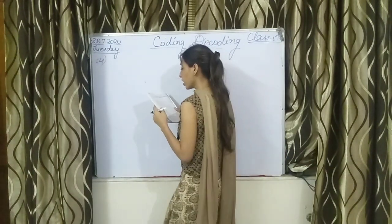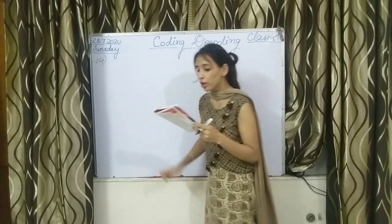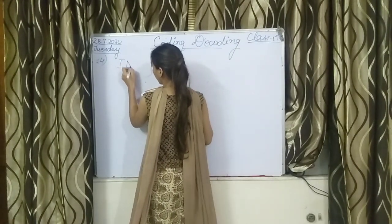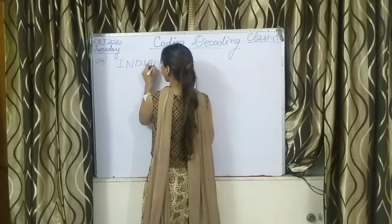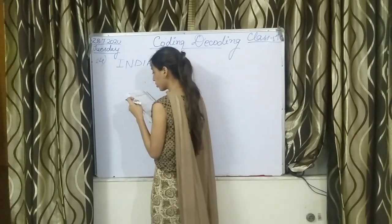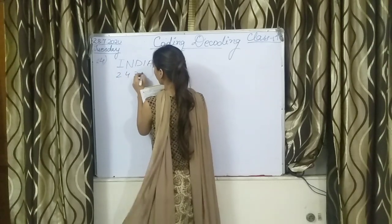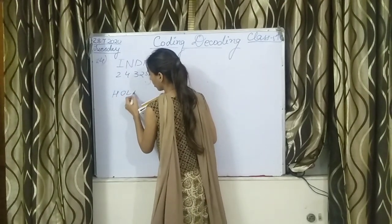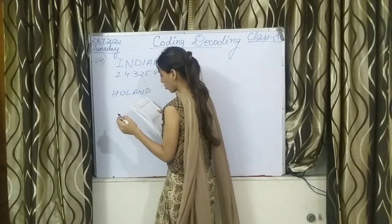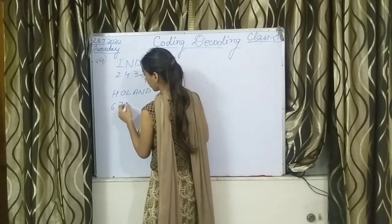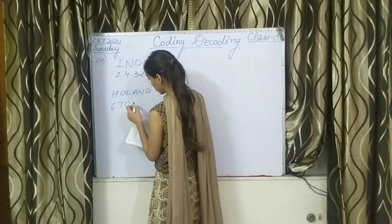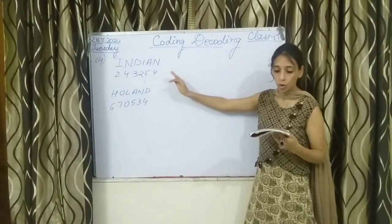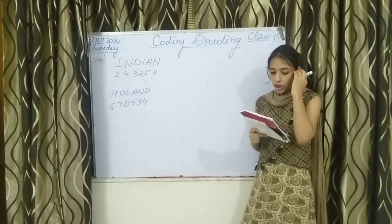Complete the earlier work. Now question number 14 says: if the code of INDIAN is 243254, and the code of HOLE is 670534, then we have to tell what will be the code of the given letters.